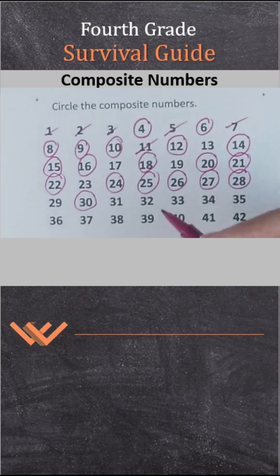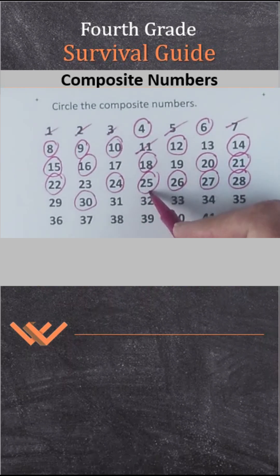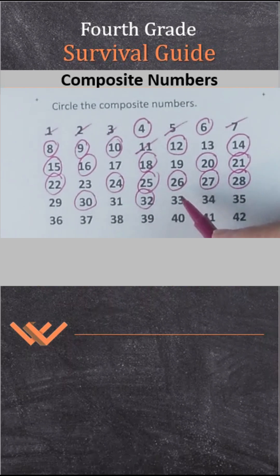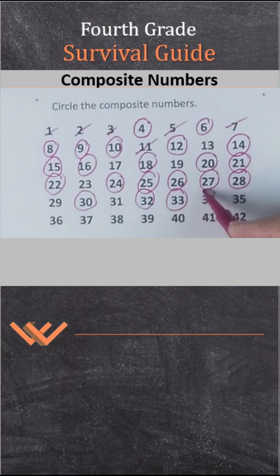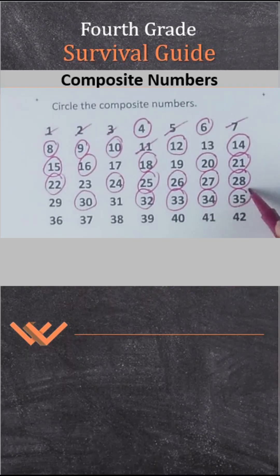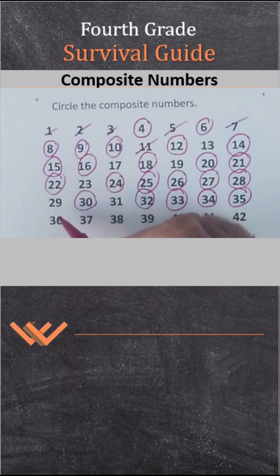31 is prime. 32 — 2 times 16. 33 — 3 times 11. 34 — what do you think? It's 2 times 17. 35 — 7 times 5. 36 — 6 times 6.